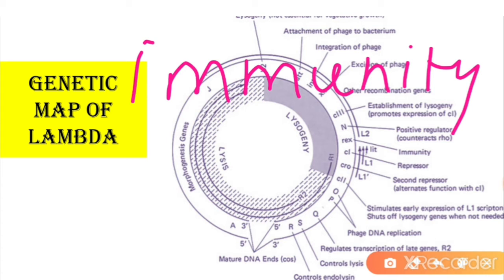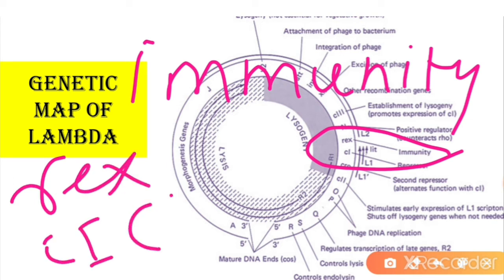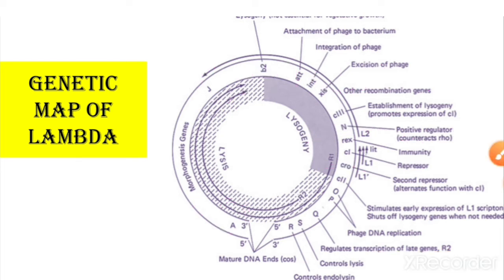The immunity operon: crossing lambda phage with other lambda phages like 434, 21, and 82 yields recombinants which possess an immunity operon in the middle of the lambda genetic map. The three key immunity genes are rex, cI, and cro. These genes control the immunity operon, where interaction with the DNA determines whether the phage enters the lytic cycle or the lysogenic cycle.